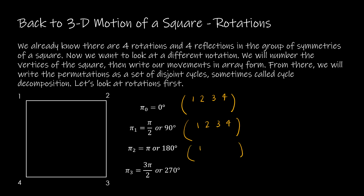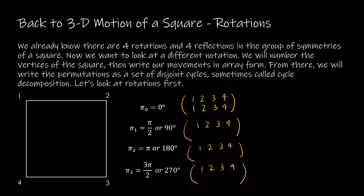In array notation, we write the vertices 1, 2, 3, 4 on the top row, and then we show on the bottom row what vertex each vertex will map to based on how far we rotate. For instance, if I rotate zero degrees, where is 1 going to go? Well, it's going to go to where 1 is currently. So 1 maps to 1, 2 maps to 2, 3 to 3, and 4 to 4. That makes sense because we're not moving.